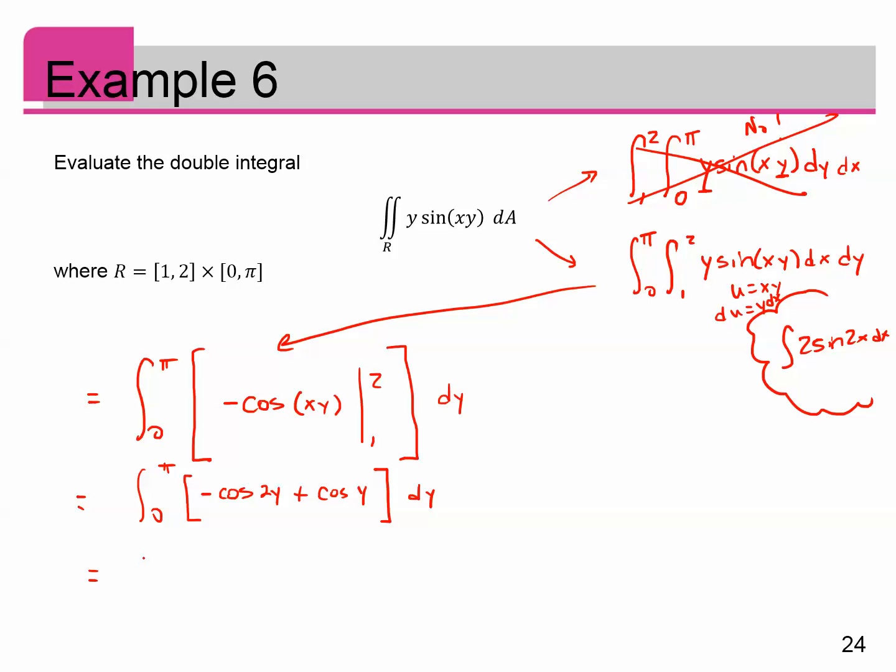So now I integrate each one of these separately. The integral of cosine is sine. So I get negative sine of 2Y. And I've got to divide that by 2 because of the chain rule. If I take the derivative of sine of 2Y, I get 2 cosine of 2Y. So I have to have a 2 on bottom to cancel that out. Plus, and then the integral of cosine is sine Y. And we do this from 0 to pi. Which actually, that gives me negative sine of 2 pi over 2 plus sine of pi minus negative sine of 2 times 0 over 2 plus sine of 0.